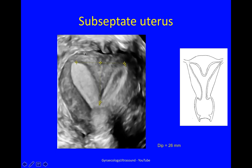Here again you've got a nice convex myometrial contour, and here you can see myometrium extending down. This angle is less than 90 degrees, so it's either subseptate or septate. And since it does not reach the cervix, it's subseptate. The length of this septum measured this way is 26 millimetres.